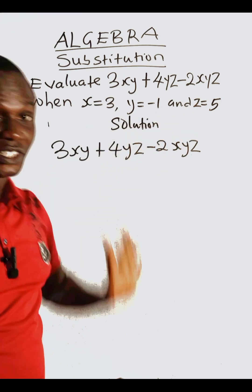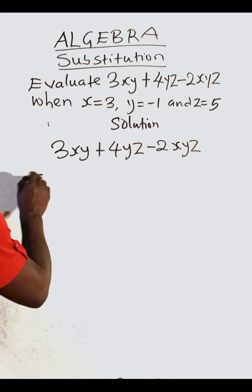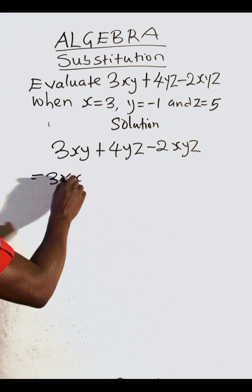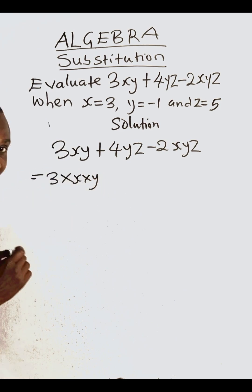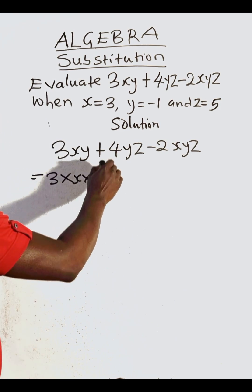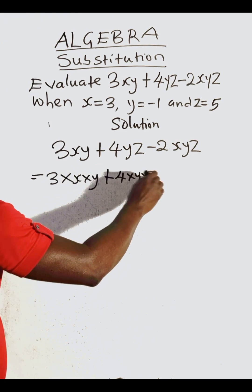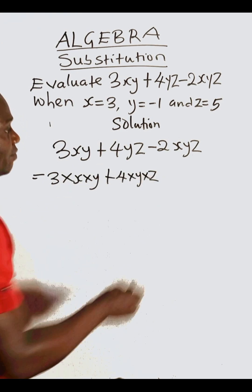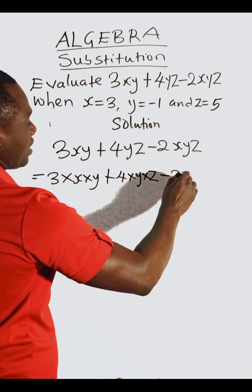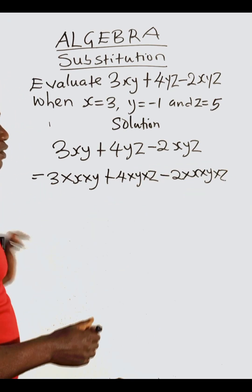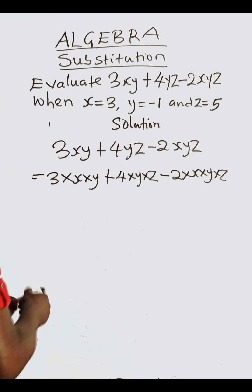But first of all, what does this mean? It means three times x times y, that is the meaning of 3xy. Then plus four times y times z, that's the meaning of 4yz. Then minus two times x times y times z, that's the meaning of 2xyz.